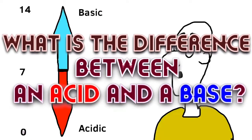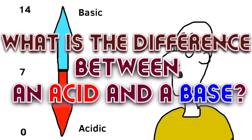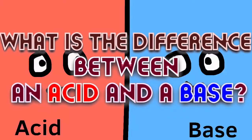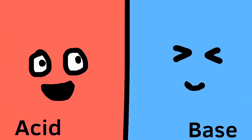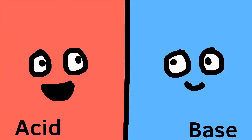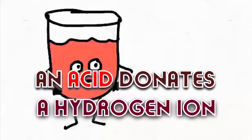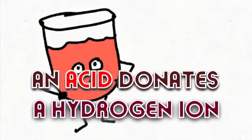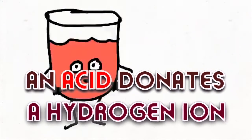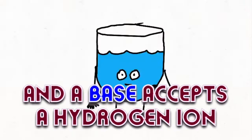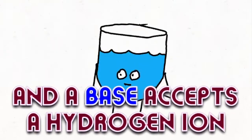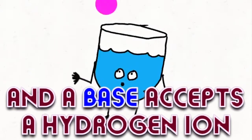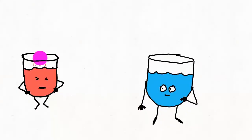What is the difference between an acid and a base? An acid donates a hydrogen ion and a base accepts a hydrogen ion.